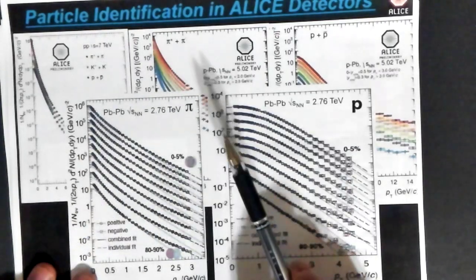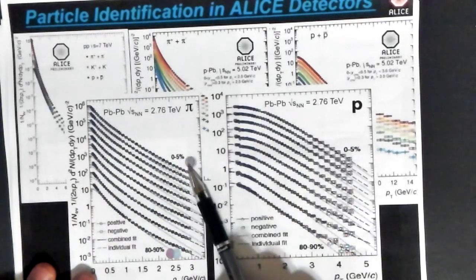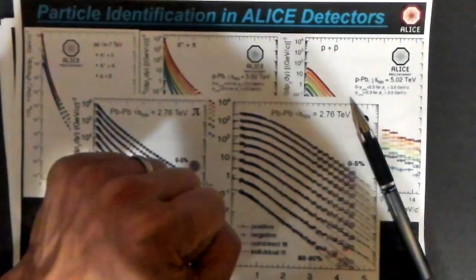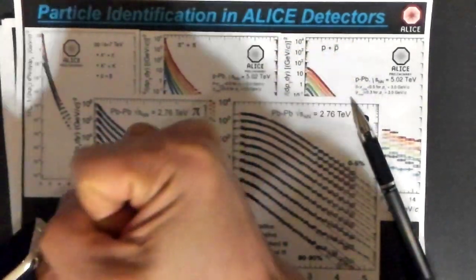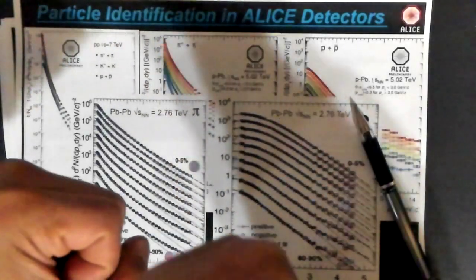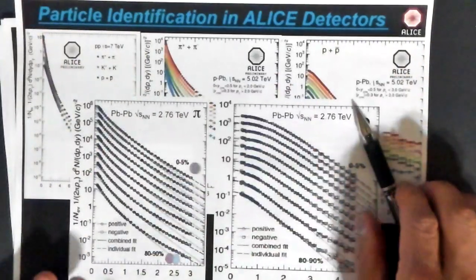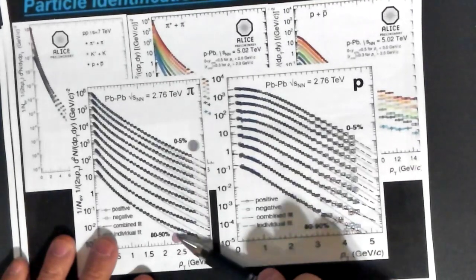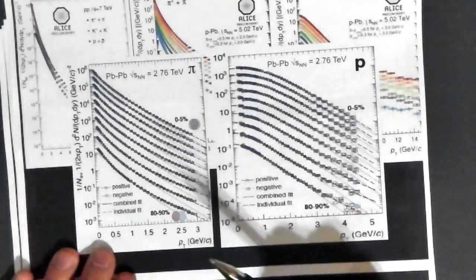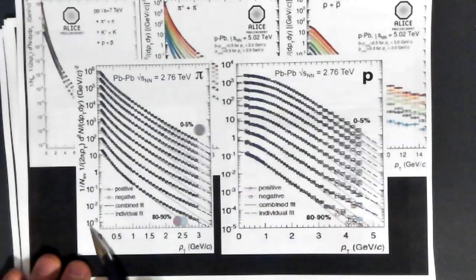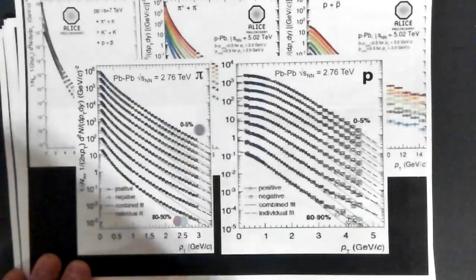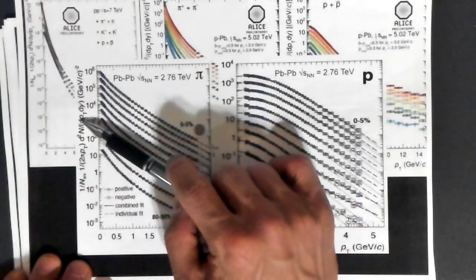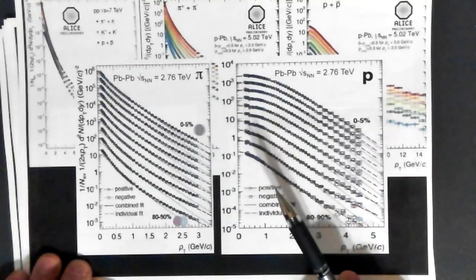You can make particle identifications for different types of collisions. You can identify whether you have a central collision — the two lead nuclei hitting head-on — or a peripheral collision, where they glance off each other. Here is the multiplicity N (number of particles) plotted as a function of transverse momentum p_T and rapidity y.